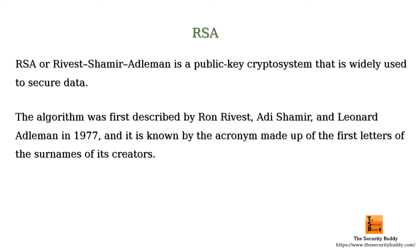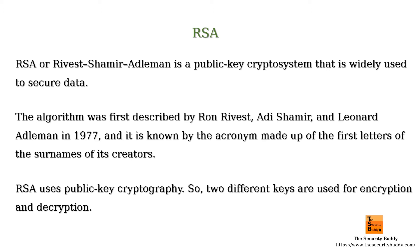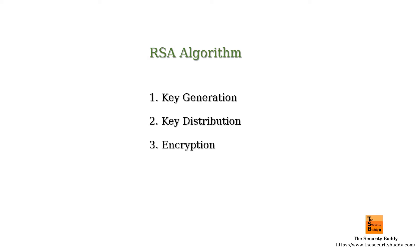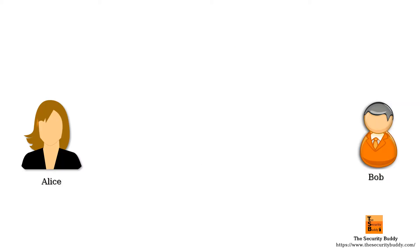RSA uses public key cryptography, so two different keys are used for encryption and decryption. The RSA algorithm involves four steps: key generation, key distribution, encryption, and decryption.